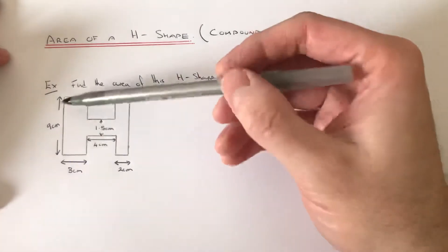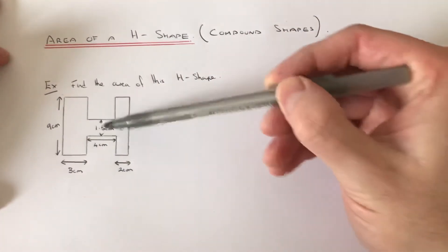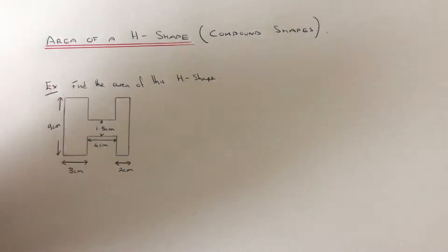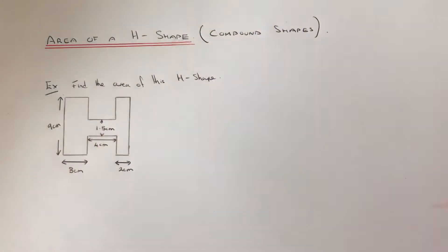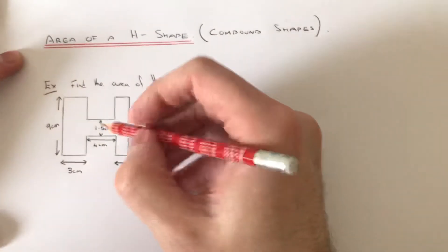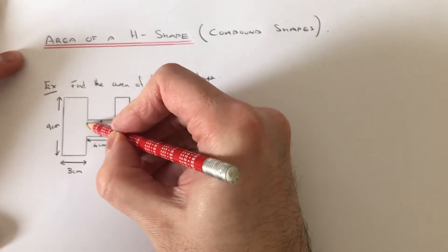Here we've got the measurements: 9, 3, 4, 2, and 1.5. So the first thing you need to do then is split your H-shape into three rectangles. The best way to do this is just to do two vertical lines.